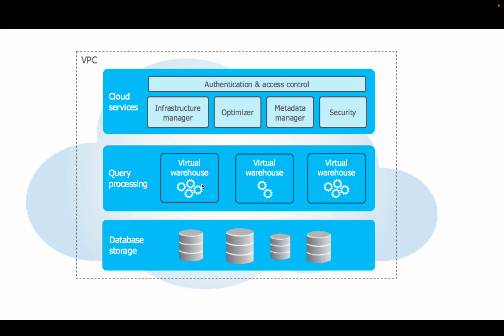Virtual warehouses come in different T-shirt sizes. If you need less computation you can go with the smallest size, and if your query is very complex and requires a lot of computation you can choose larger sizes like XL, 2XL, or 4XL.